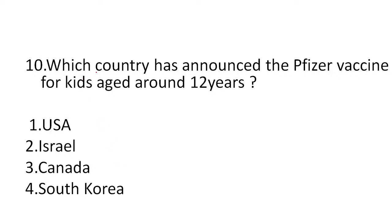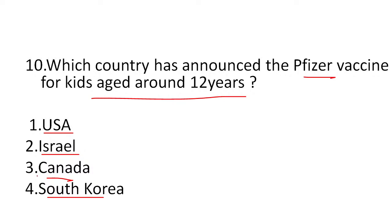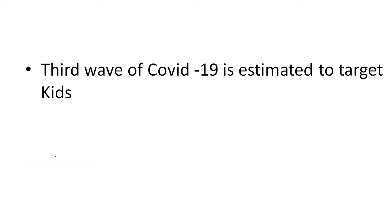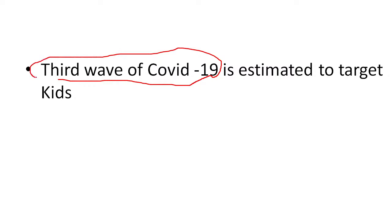The tenth question is: which country has announced the Pfizer vaccine for kids aged around 12 years? One: USA, two: Israel, three: Canada, four: South Korea? The answer is Canada. This is important because many people are speaking about the third wave of COVID-19, saying it will target kids. They will definitely ask about vaccines for kids, how kids can be protected against coronavirus, and what medicines can be used for them.